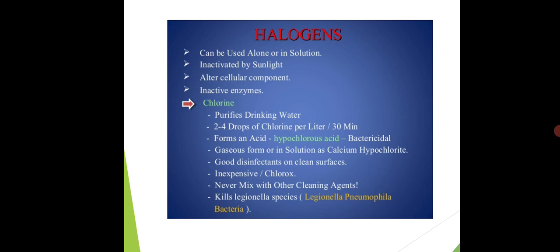Acids like hypochlorous acid is a form of halogen and it is bactericidal. Bactericidal means it kills bacteria. In gaseous form, it is present as calcium hypochloride. In gaseous form, it is present as calcium hypochloride. It acts as good disinfectant on clean surface. It is inexpensive.